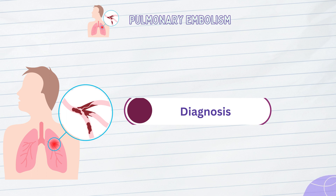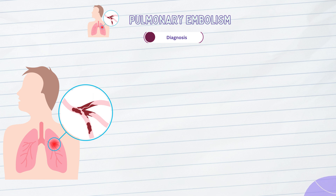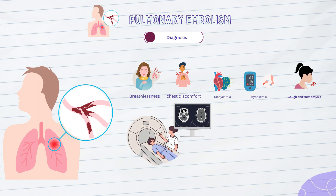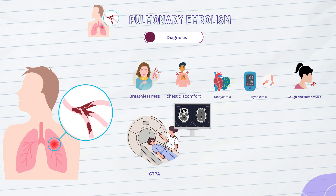The diagnosis of pulmonary embolism begins with a thorough clinical examination. Healthcare providers will collect information regarding the patient's medical history, symptoms, and any risk factors that may increase the likelihood of PE. Key symptoms that raise suspicion include sudden-onset dyspnea, chest pain, cough, and hemoptysis. Computed tomography pulmonary angiography, CTPA, is considered the gold standard for diagnosing pulmonary embolism. It involves injecting a contrast dye into the patient's veins and performing a CT scan to visualize the pulmonary arteries. CTPA is highly sensitive and specific, providing detailed images of the pulmonary vasculature and helping determine the location and extent of the blood clot.